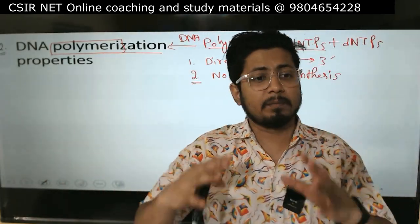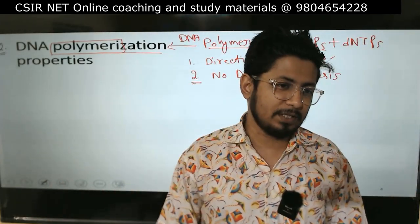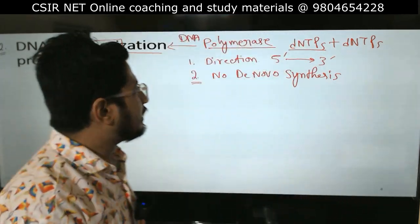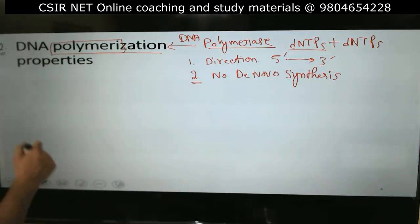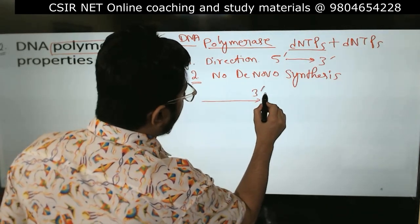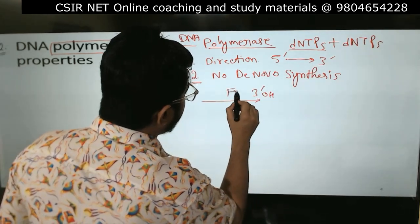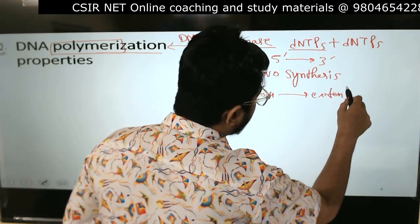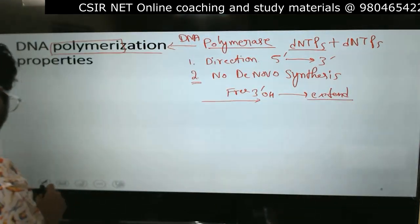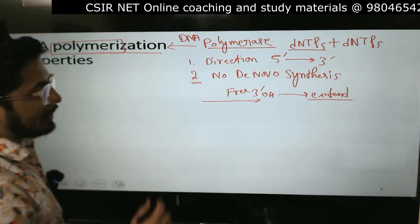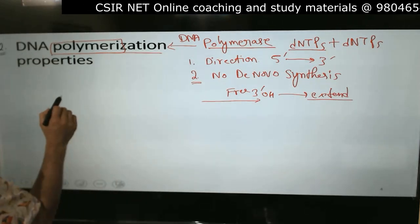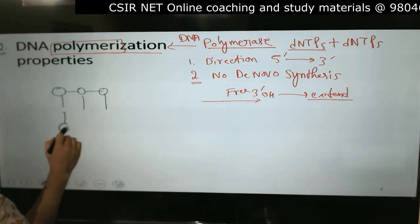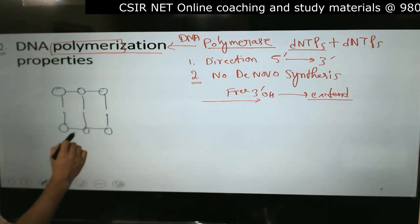RNA polymerase can function all on its own with just the help of a sigma factor to recognize the promoter. But DNA polymerase requires multiple accessory enzymes to continue the DNA replication process. As we know, DNA polymerase is not de novo — it requires a free 3' hydroxyl in order to extend.